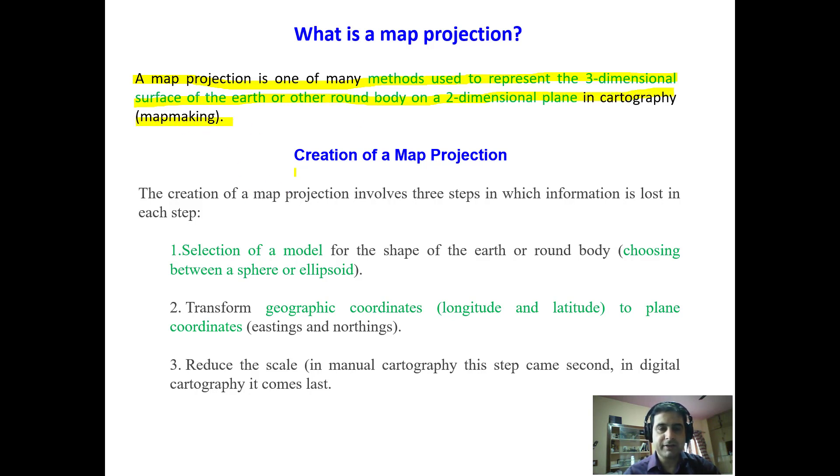Now what are the different steps for creation of a map projection? It involves first we have to select the model for the shape of the earth. That is we have to choose whether we want the earth to be a sphere or ellipsoid. Number second is we have to transform geographic coordinates, that is latitude and longitude, to plane coordinates, that is eastings and northings.